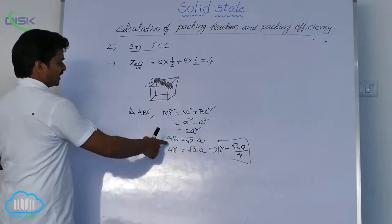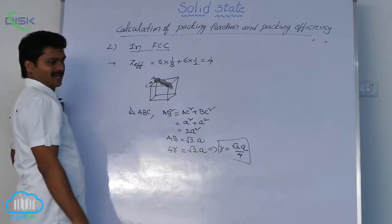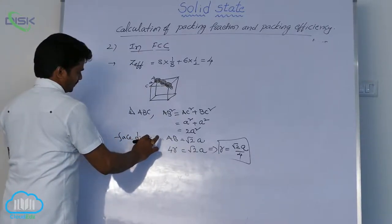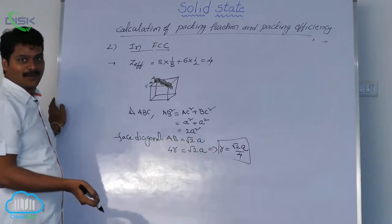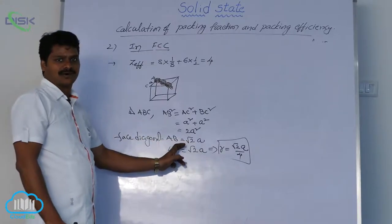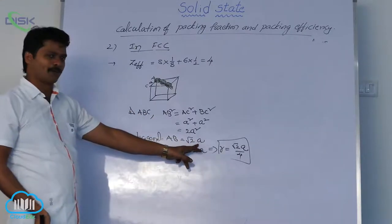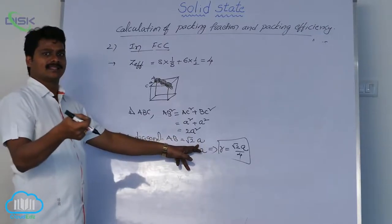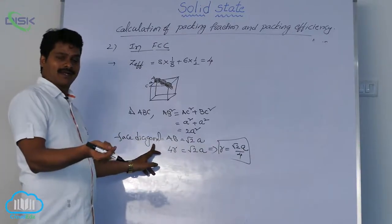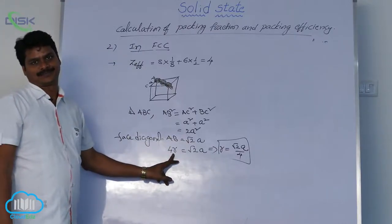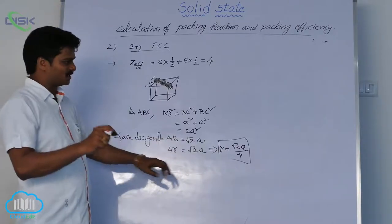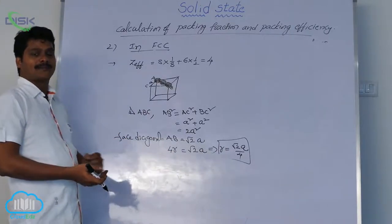AB is nothing but the face diagonal. So face diagonal length equals root 2 times A. Sometimes in problems, face diagonal length will be asked, so directly use this formula root 2A. Edge length will be provided in the question, and using that we can calculate face diagonal. This is the relation between radius of atom and edge length in FCC geometry. From this, how do we calculate packing efficiency?